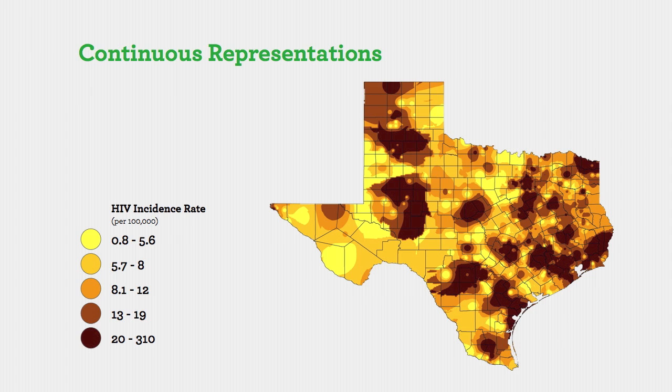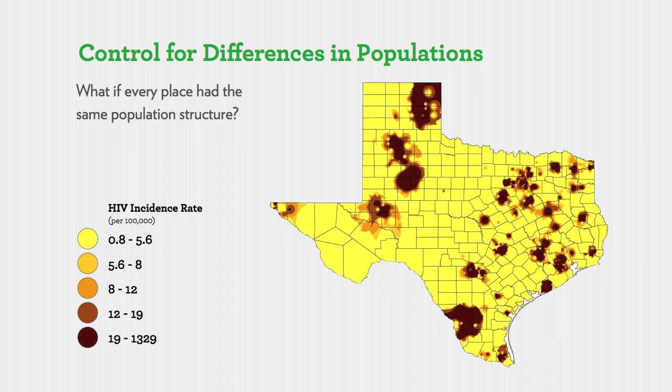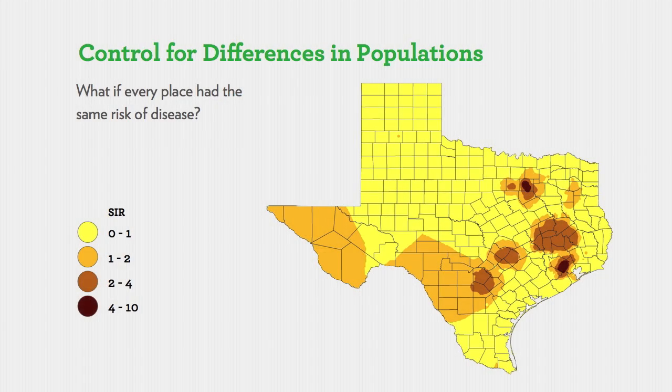We've been working closely with the Texas Department of State Health Services, constructing maps looking at HIV and AIDS outcomes across the state. The ability to think about the geographies of where these diseases occur can prompt interesting questions — like what would happen if every place had the same population structure, or the same risk of disease as the rest of the country? The point is there is no perfect map, no best map. The map is driven by the question you're trying to answer, and you make the most appropriate map for that purpose.